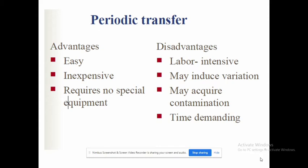The advantage of periodic transfer is that it is easy and inexpensive and requires no special equipment. The disadvantage is that it is a laborious process — you need to prepare culture again and again and inoculate. During periodic transfer, variation may occur due to mutation, and contamination is also possible during the transfer process. It is also time-demanding.